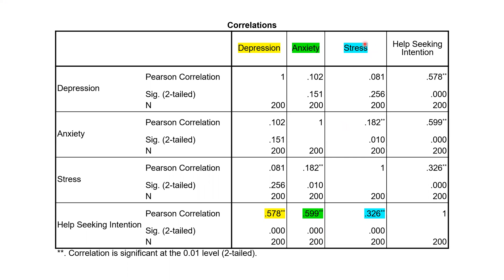Lastly, what about stress? This coefficient is where the two variables, stress and help-seeking intention, intersect. The coefficient is positive, so the correlation is positive. The p-value is also less than 0.001. We can say there is a significant positive relationship between stress and help-seeking intention, p < 0.001.